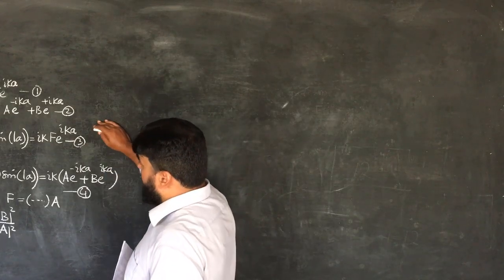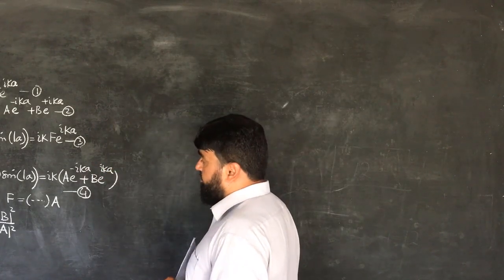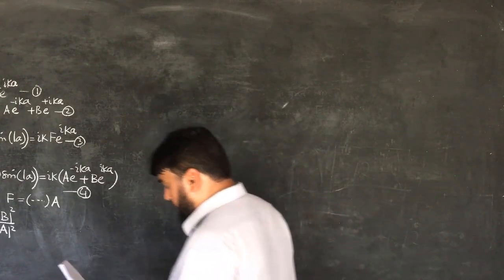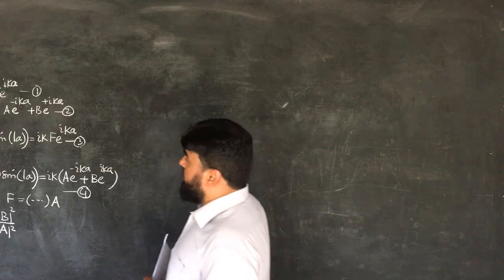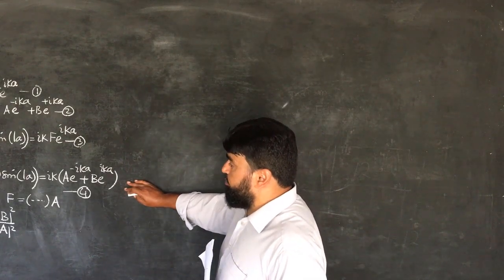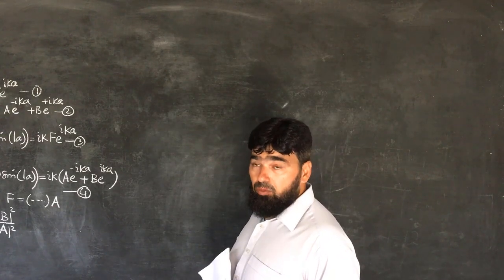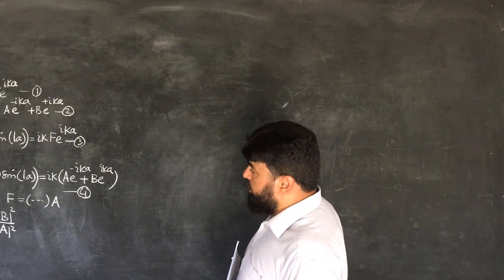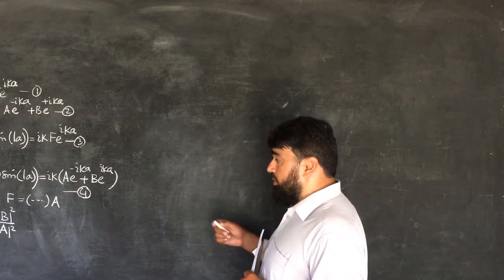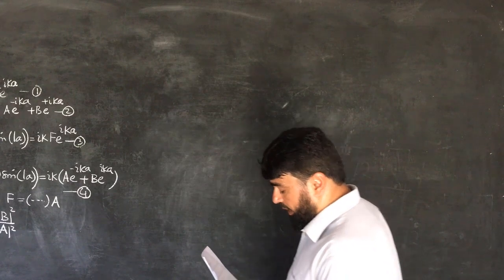Out of these four equations, we will have to derive the transmission and the reflection coefficients. As this is just very simple mathematics, it means dealing with the equations, eliminating some constants and eliminating one from the other and then putting in the next equation.